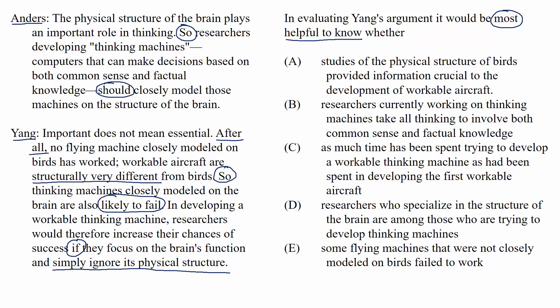Anders is basically recommending that researchers model thinking machines on the structure of the brain. Yang disagrees and thinks that those kinds of thinking machines would probably fail, because of the analogy to modeling a flying machine on a bird and the fact that workable aircraft are very structurally different from birds. Then Yang makes a new recommendation: for a workable thinking machine, researchers should focus on the brain's function and just ignore its physical structure.